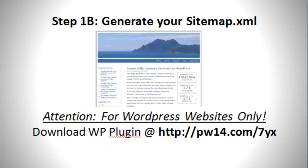Step 1b: Generate your sitemap. This is for WordPress websites only. Download the plugin called Google Sitemap Generator for WordPress. You can get that at www.pw14.com/7yx.